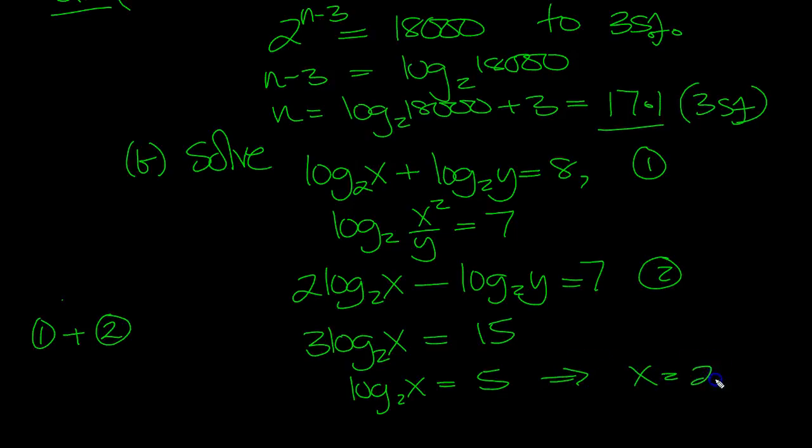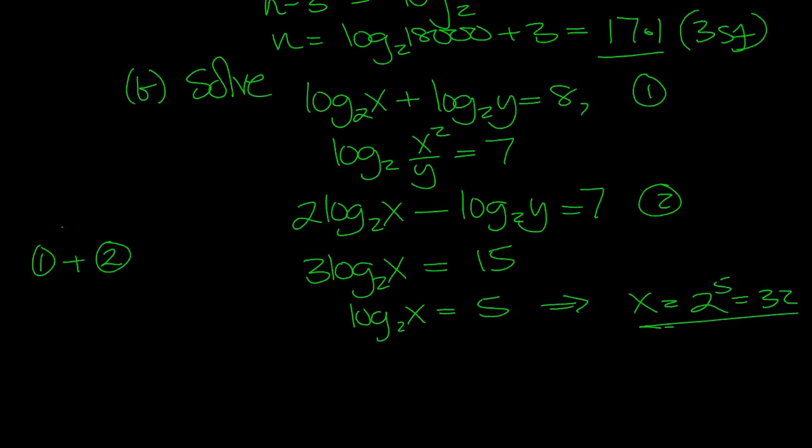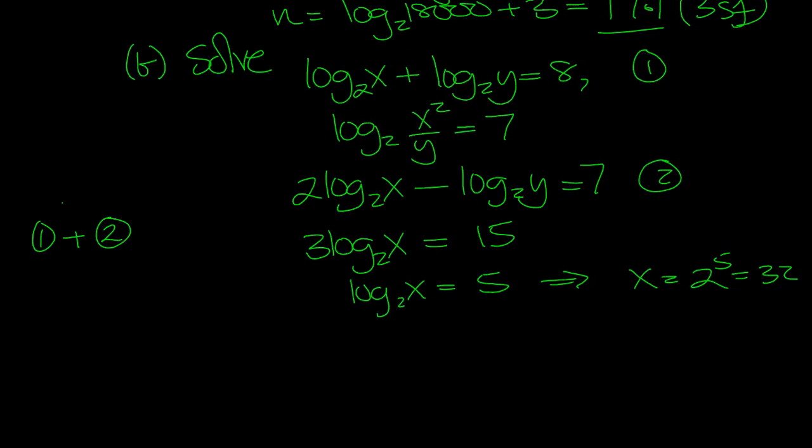So x is equal to 2 to the 5. Unwrap the log, 2 swings down, hits that in the air. 32, x is 32.